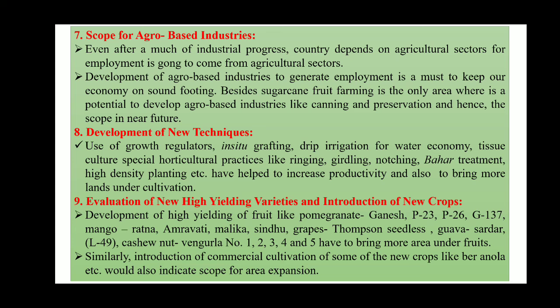Evaluation of new high-yielding varieties and introduction of new crops is another scope. In the last two to three decades, a lot of research has been done — for example, pomegranate varieties Ganesh, P23, P26, G137, and Bhagwa; mango varieties Ratna, Amaravati, Mallika, Sindhu; grapes Thompson Seedless; guava Sardar L49; cashew nut Vengurla numbers 1 through 5. Introduction of commercial cultivation of new crops like ber, amla, etc. will further expand the area.